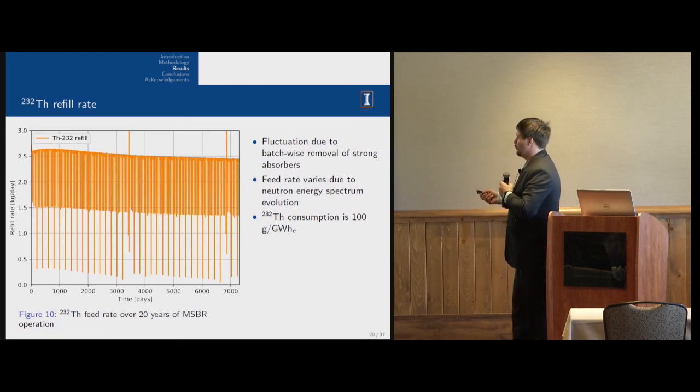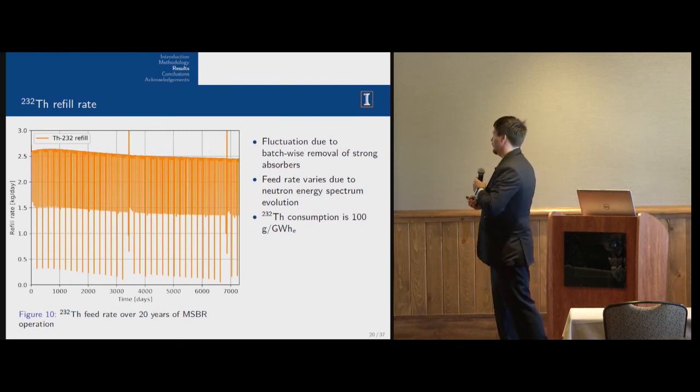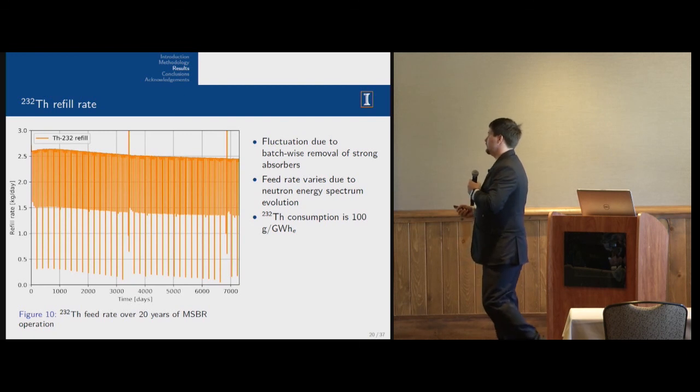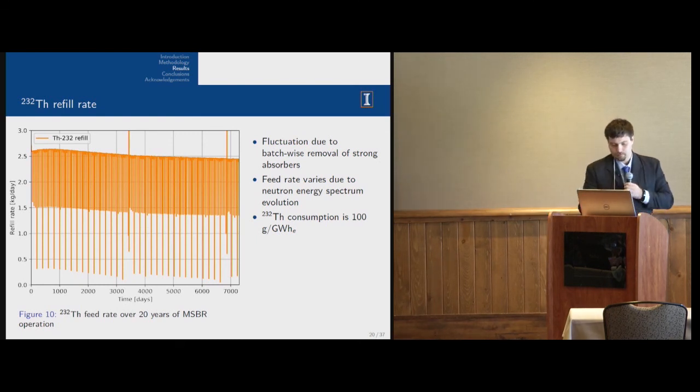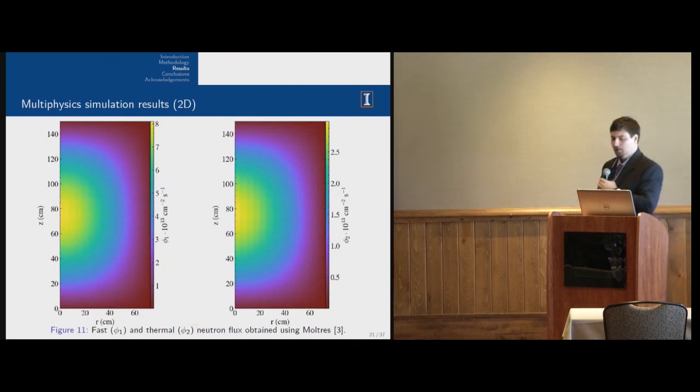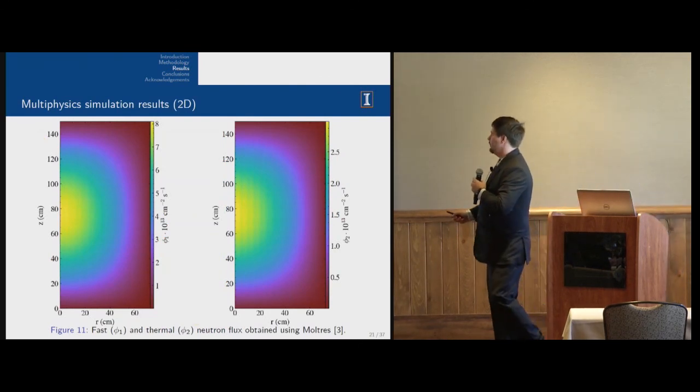There's another interesting finding. There's the thorium refuel rate. It's a thorium fuel cycle reactor. I think the most awesome finding is that thorium consumption for this type of reactor is only 100 grams per gigawatt hour electric. I ran some numbers. If you want to use coal for this, it would be about 400 tons.